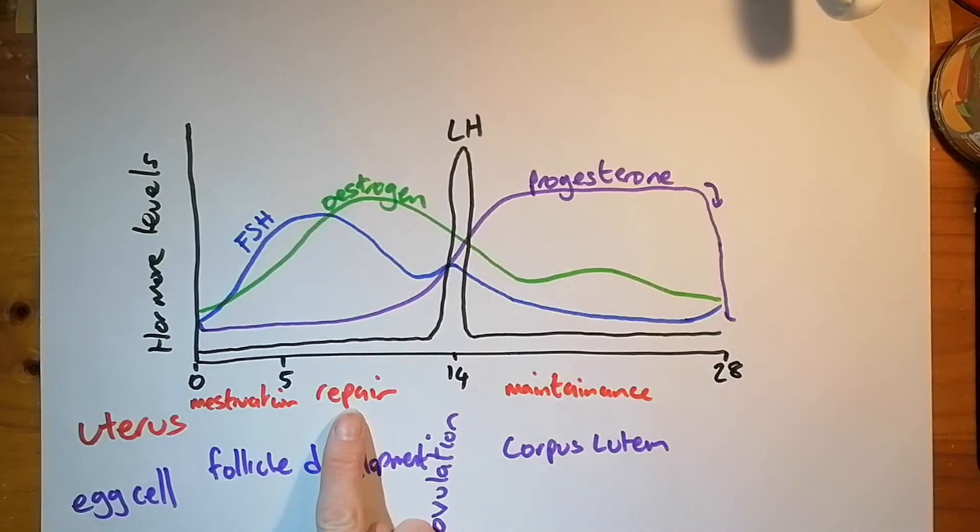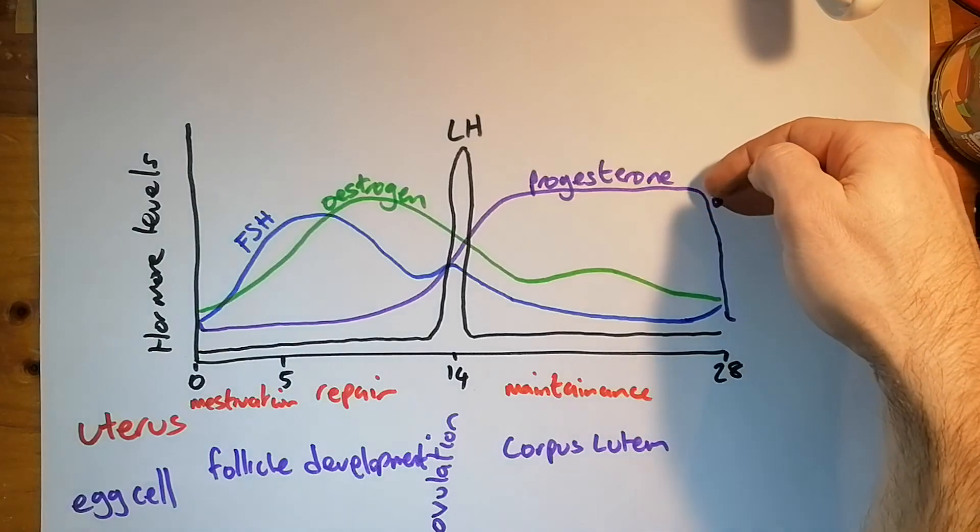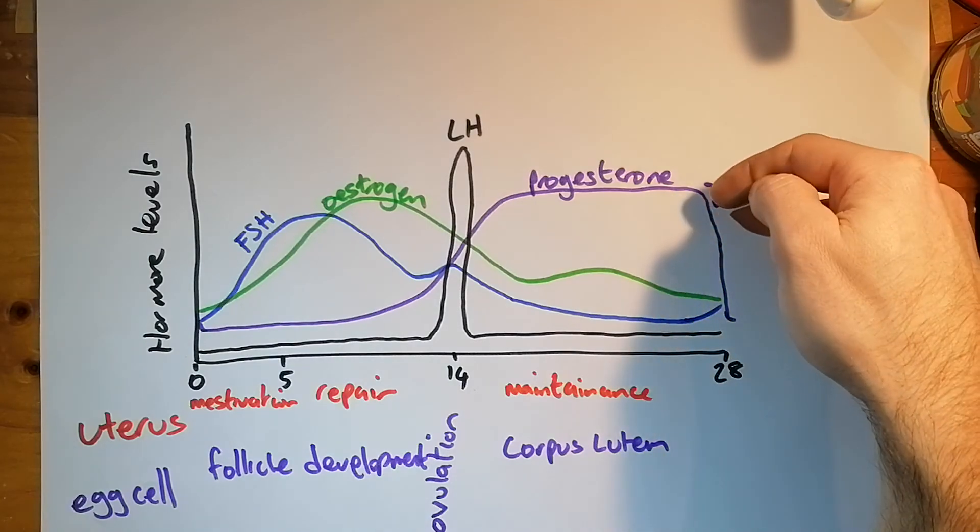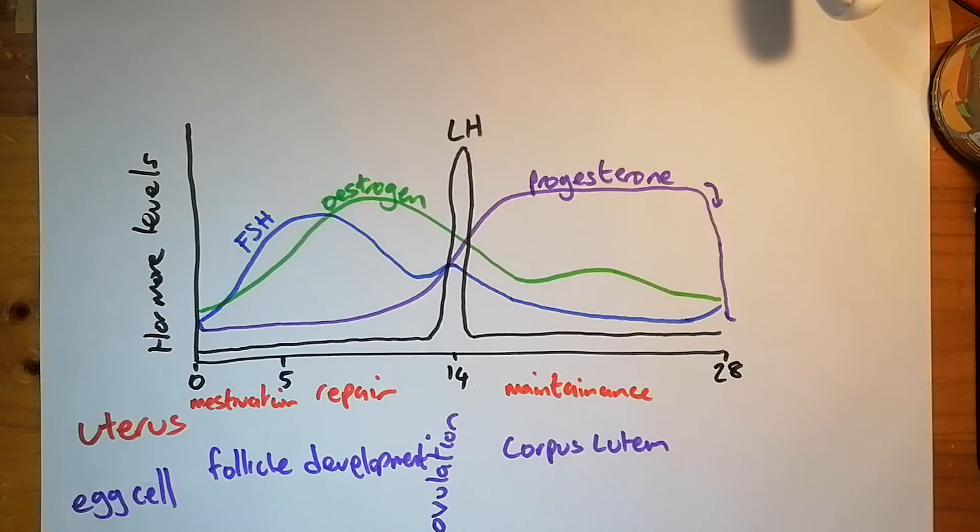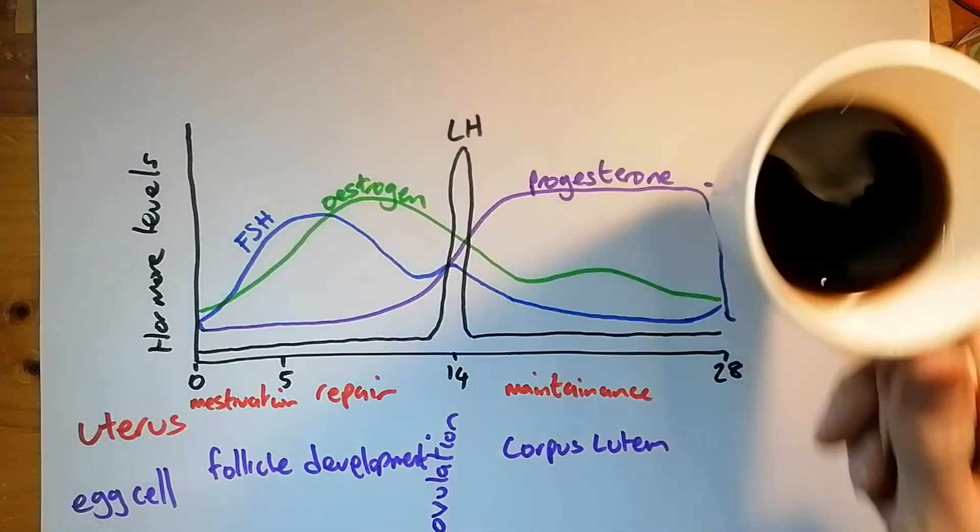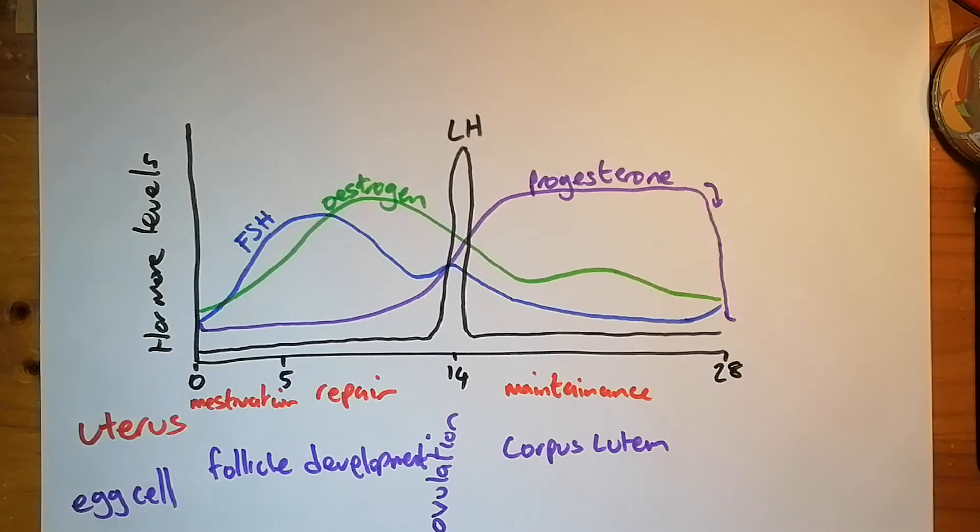Estrogen causes repair of the uterus lining after menstruation. LH causes ovulation. Progesterone causes maintenance of the uterus lining after ovulation. And falling progesterone, that's what causes the onset of menstruation. If you want to try and get that graph, you can. You can pause the video.